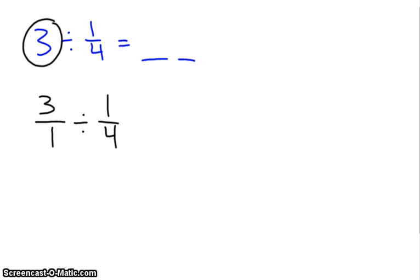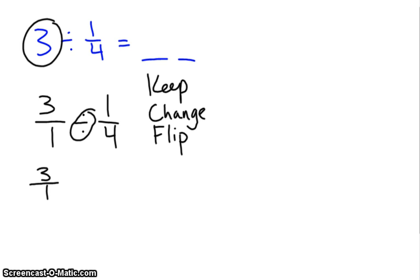Okay. Now, the next thing I'm going to do is what we like to call keep, change, flip. So I keep my dividend just the way it is, 3 over 1. I change my operation from division to multiplication. And then I flip my divisor from 1 fourth to 4 over 1.